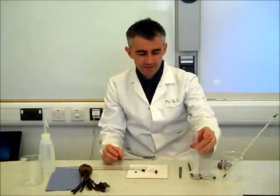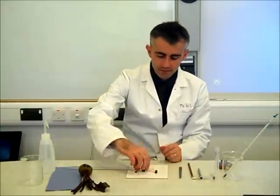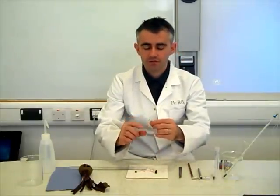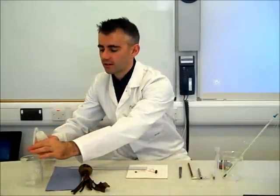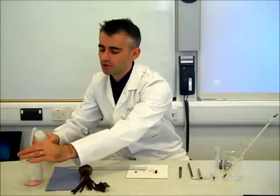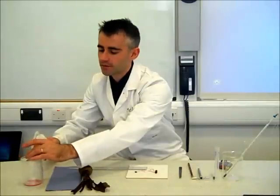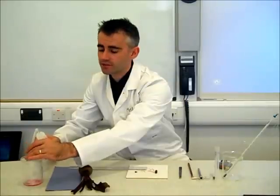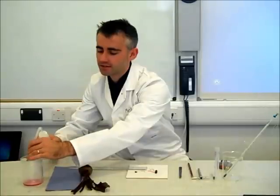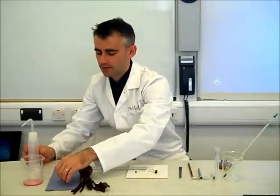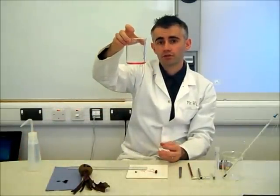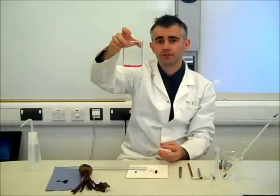There is my one centimetre section of beetroot. You can see that from the cutting process there is already some pigment on the outside of the beetroot. I'm going to rinse that off with some distilled water — I'm purposely using distilled water and not tap water. Think about why that would be. After a good rinse, I'll leave it on tissue to dry. You can see the significant amount of colouration in the wash water from the cutting process.